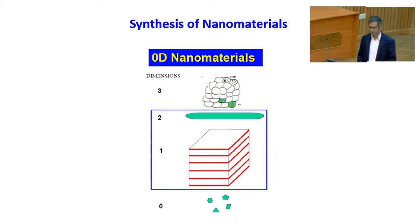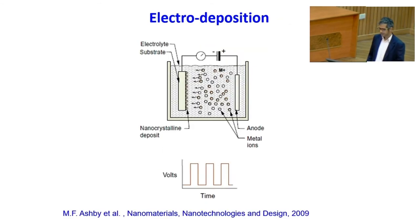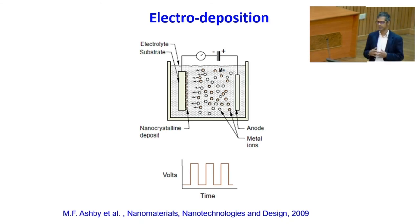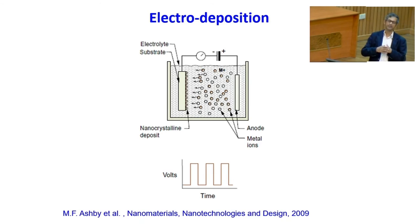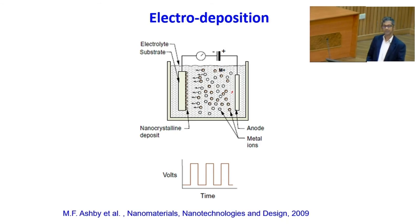Now we talk about 1D and 2D nanomaterials. One way of creating these is electrodeposition, a standard technique to create large-area thin films. In an electrolytic cell with a solution and two electrodes — anode and cathode — when current is applied, material dissolves from the anode and deposits on the cathode. To create nanocrystalline deposits you apply a pulsed voltage rather than constant voltage.